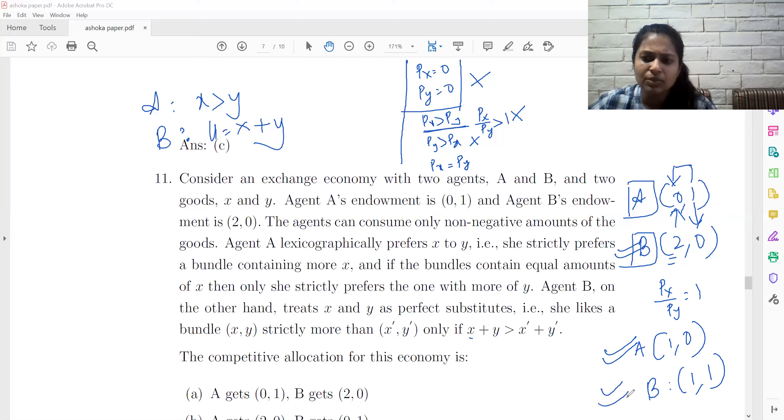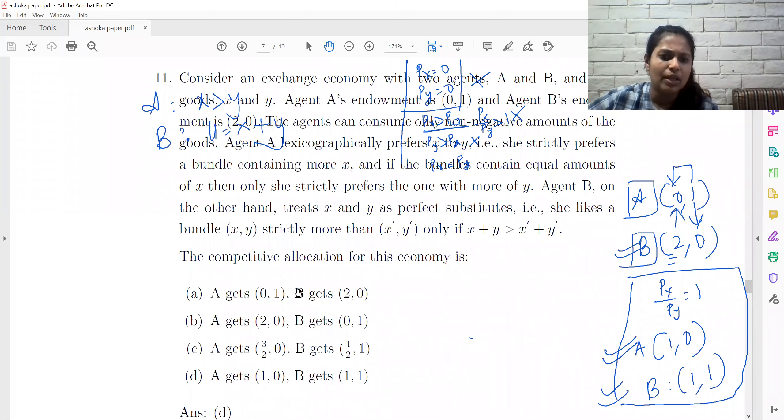And B is indifferent between trading and not trading. So they are both satisfied. So this can be an equilibrium solution, which means that A is 1,0 and B is 1,1. Now let us look at the options and that option is D.